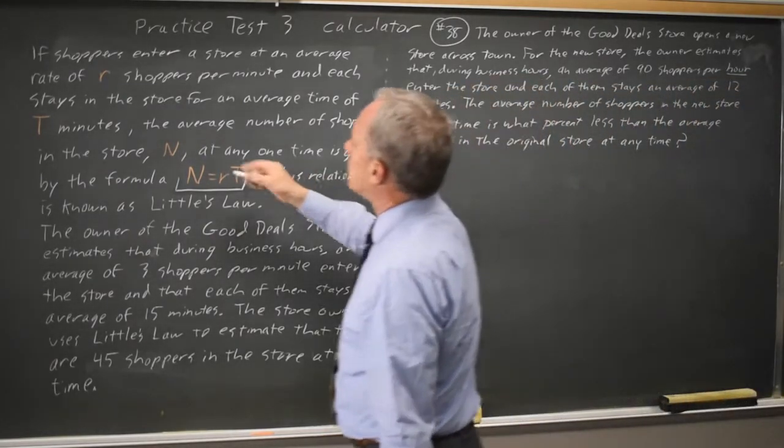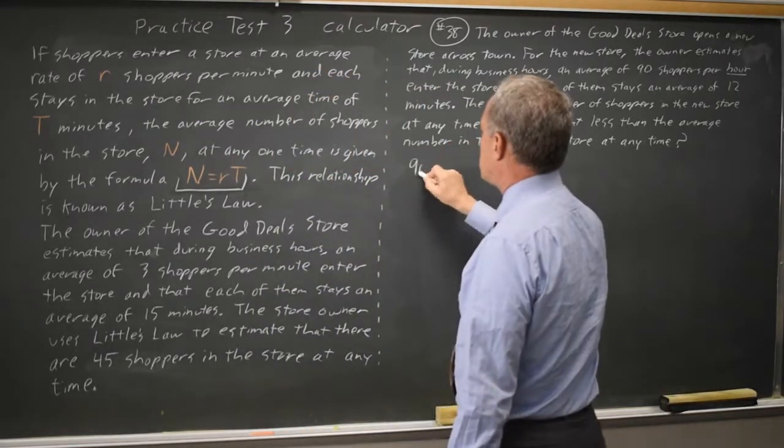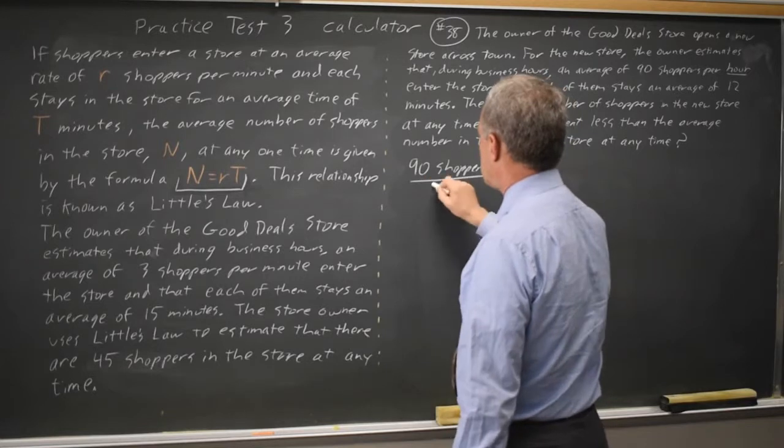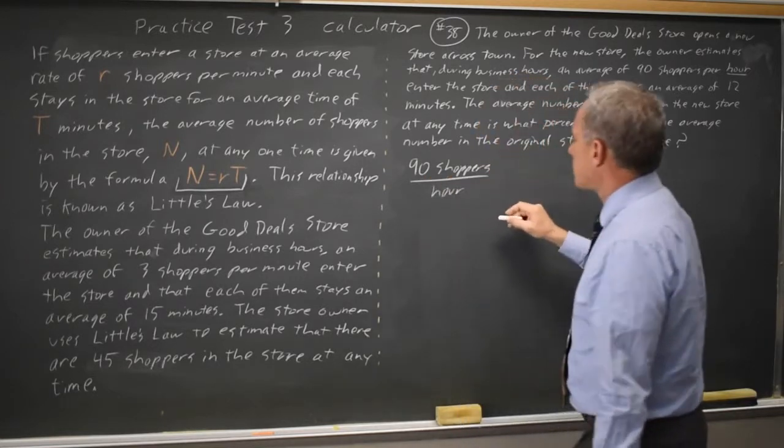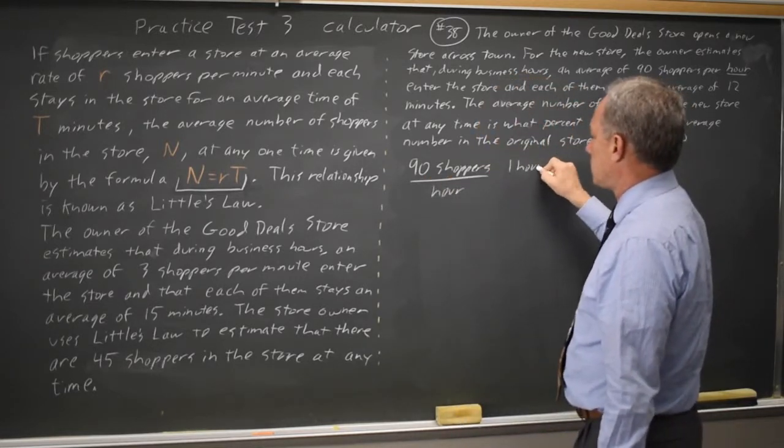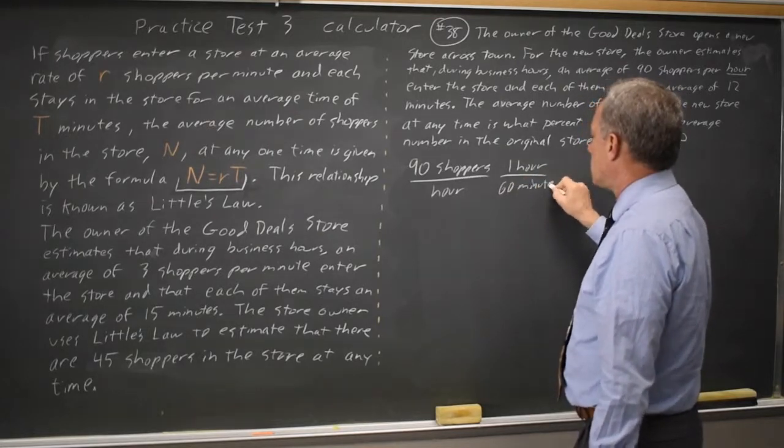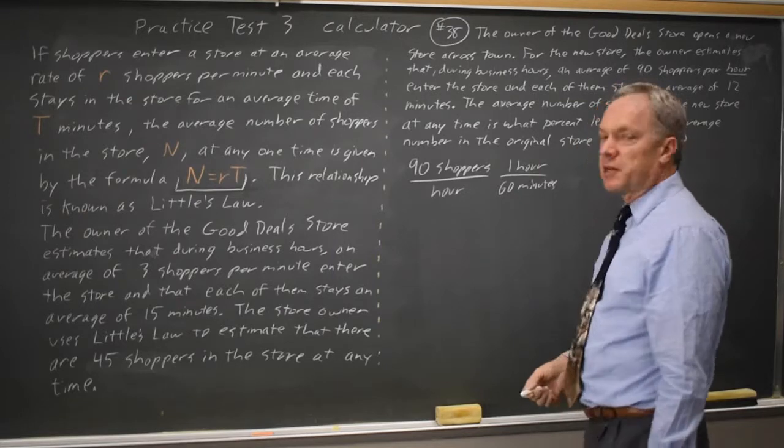We notice that R is shoppers per minute, so I'll convert 90 shoppers per hour. If I multiply that by 1 hour equals 60 minutes, so 1 hour over 60 minutes is 1. I'm multiplying by 1, I'm not changing the value.